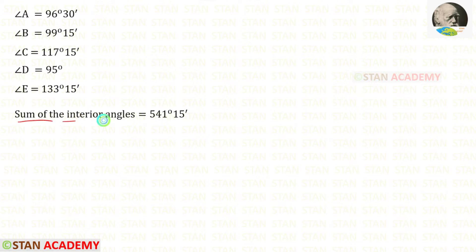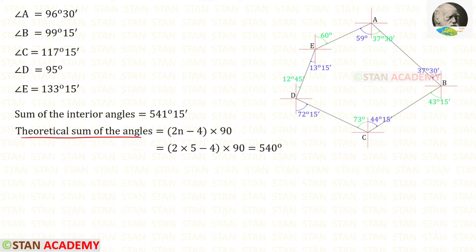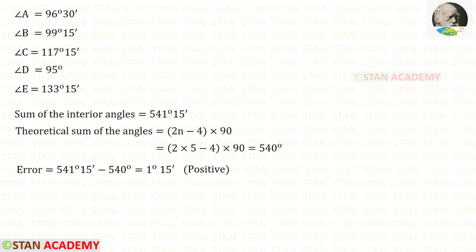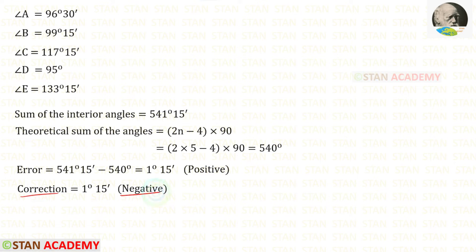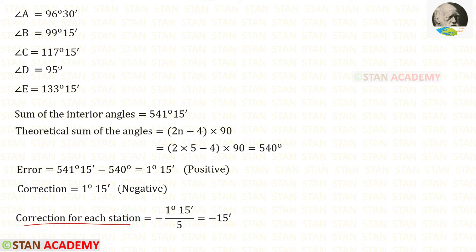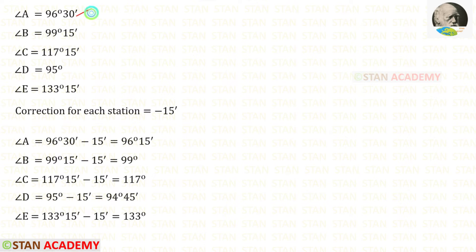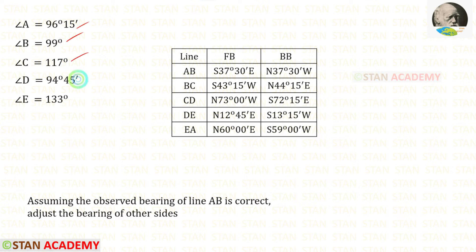Now let us find the sum of the interior angles by adding these five angles; we get 541 degrees 15 minutes. The theoretical sum formula is (2n − 4) × 90. Here n = 5, so the theoretical sum is 540 degrees. The error is 541 degrees 15 minutes minus 540 degrees, giving 1 degree 15 minutes — a positive value, so the correction is negative. For each of the five stations, the correction is −1 degree 15 minutes ÷ 5 = −15 minutes. Subtracting 15 minutes from each angle gives the corrected interior angles.